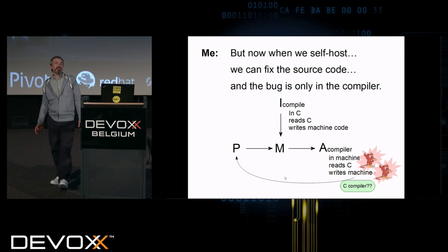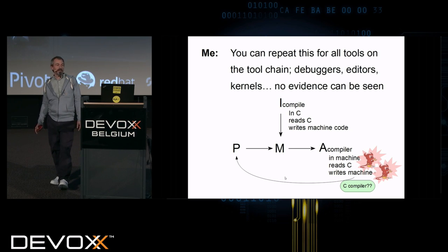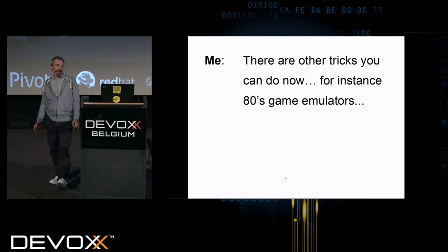The bug is only in the compiler. You can't see it in the source code at all. And you can repeat this for all the tools in the tool chain: debuggers, editors, kernels. No evidence will be found in the source code. The bug is only ever in the machine code. But when it reads itself, it pushes the bug back. And when it reads your debugger, it pushes a buggy debugger that hides itself. Really slick.